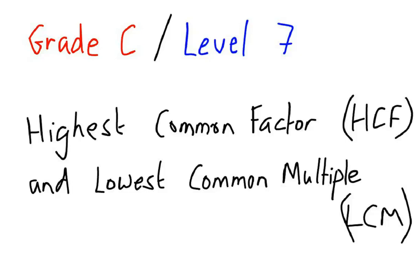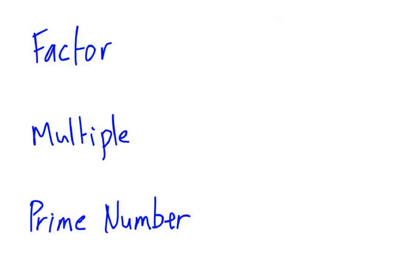Hello, it's Mr Thompson here and I'm going to talk you through quite a common grade C or level 7 topic, which is all about finding the highest common factor and the lowest common multiples of two or more numbers. So in order to understand this topic we need to first understand three very important terms: factor, multiple and prime number.